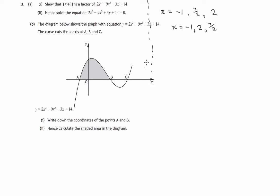So that's the graph, the cubic graph. And the curve cuts the x-axis at A, B and C. So that shows you when this expression is equal to zero. That's the solutions that we got when we solved this equation in part A. So A has to correspond to the negative 1 root. B has to correspond to the 2. And C will correspond to the 7 over 2.